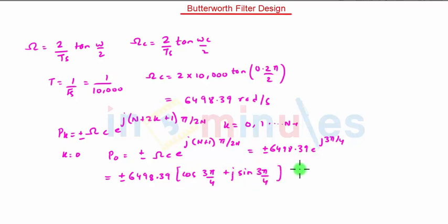That will give us plus minus 6498.39 multiplied by minus 0.707 plus j0.707. So finally we have P0 as 2 points. That is we will take the positive sign 6498.39 multiplied by 0.707 plus j0.707.